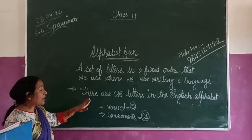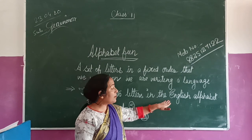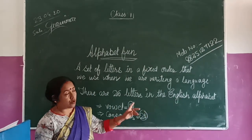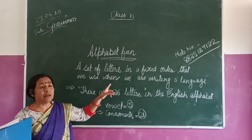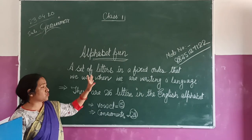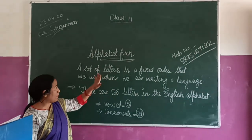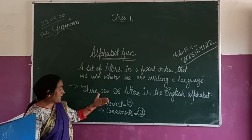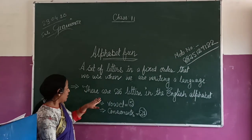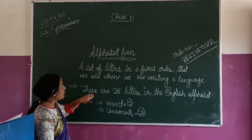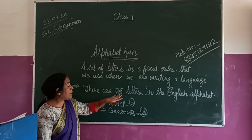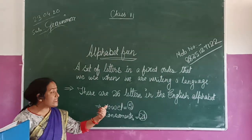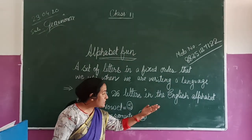So, there are 26 letters in our English alphabet. We all know, because we have already read in class 1. You know about the letters. But we will proceed again and read about the letters and their division. There are 26 letters in the English alphabet.